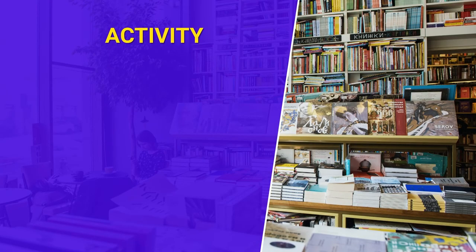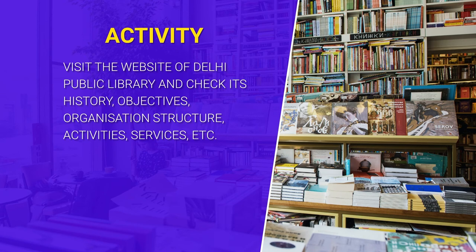The main aim of a public library is to educate people, entertain them, and take care of recreational, informational, and educational needs. They also act as activity centers, local information centers, local gateways to information and knowledge, and community centers. As an activity, visit the website of Delhi Public Library or any other public library and check its history, objectives, organizational structure, activities, and services. This will give you a feel of how a public library functions.